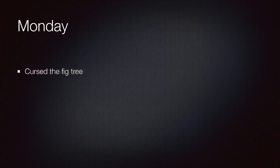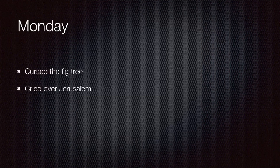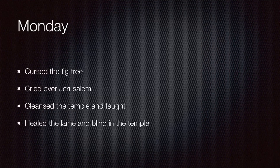Today we're going to see four things, though we're only going to spend time on three of them. First, Jesus curses the fig tree — we'll talk more about that tomorrow. Second, he wept over Jerusalem on his way into the city. Third, he cleanses the temple and taught there. And finally, he healed the lame and the blind in the temple, taking time even in the midst of everything going on to minister and to serve these people.